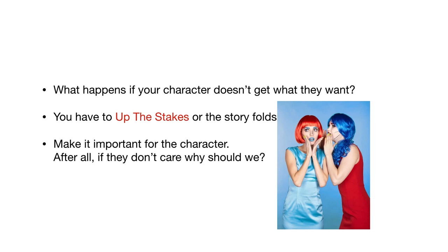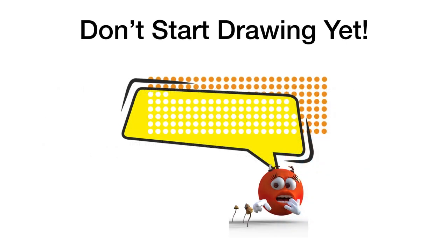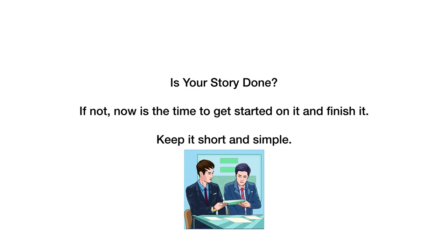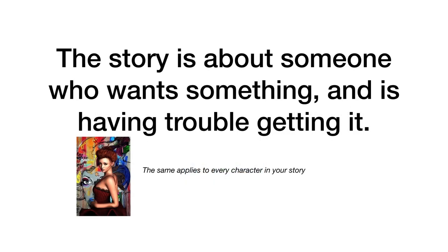So what happens if your character doesn't get what they want? Do they just give up? End of story — very short comic. So you have to up the stakes. For example, if your character doesn't get the prize, will he lose his house? Will his mother end up on the street because he can't pay up? You have to up the stakes. You can't start drawing yet — you need to get this story done. If you're looking for inspiration, watch Burn Notice Series 1 on Netflix. It's perfect for redoing as a comic. The story is about someone who wants something and is having trouble getting it. That's what you build on.